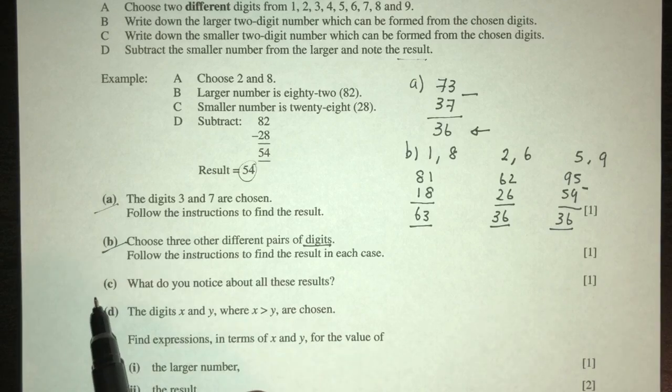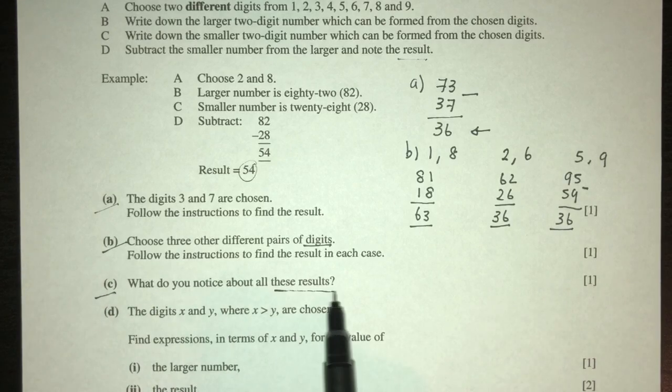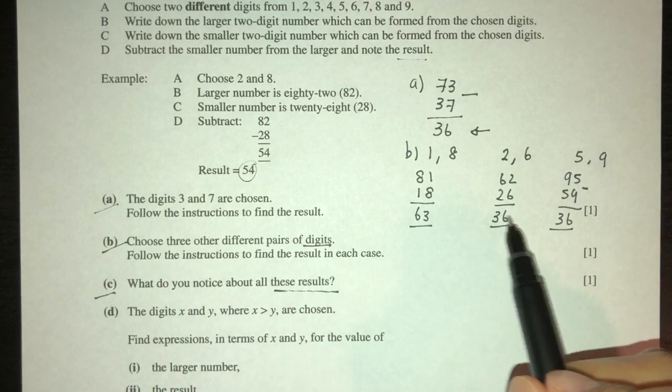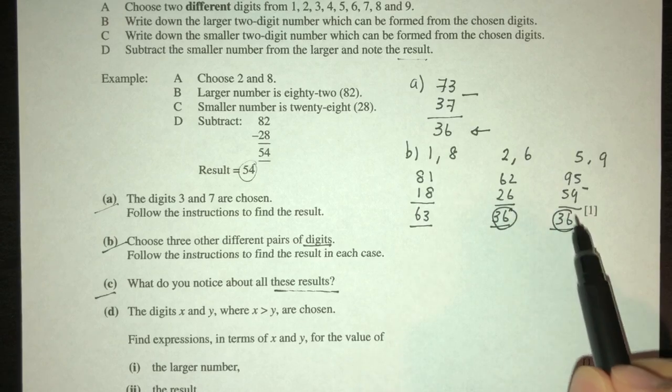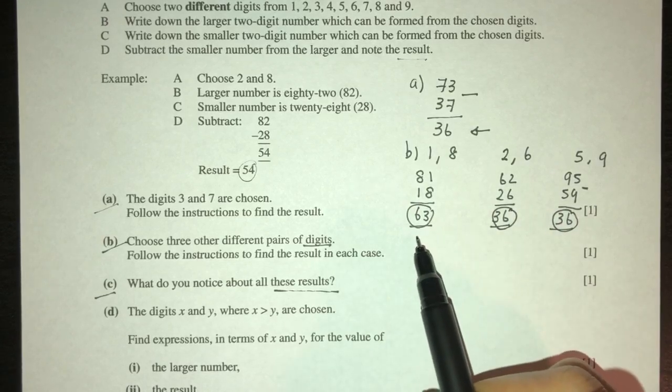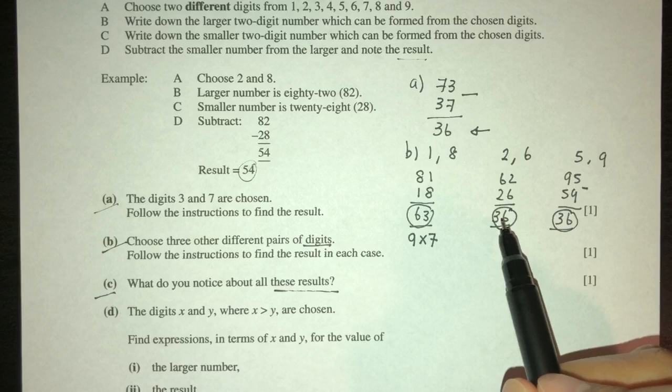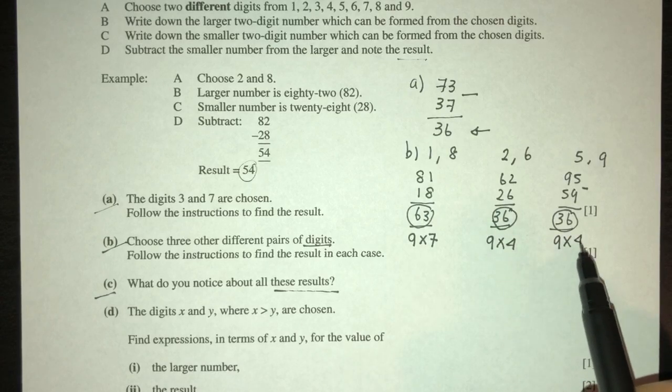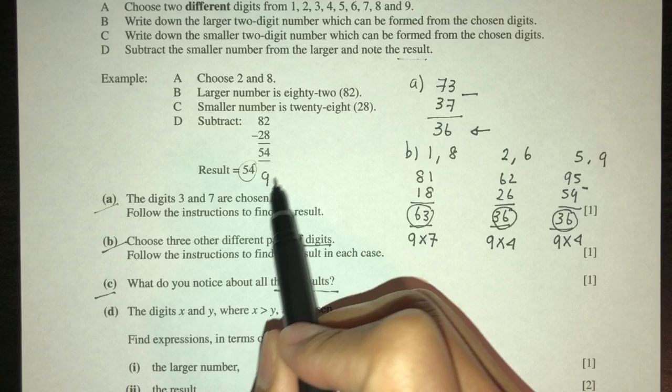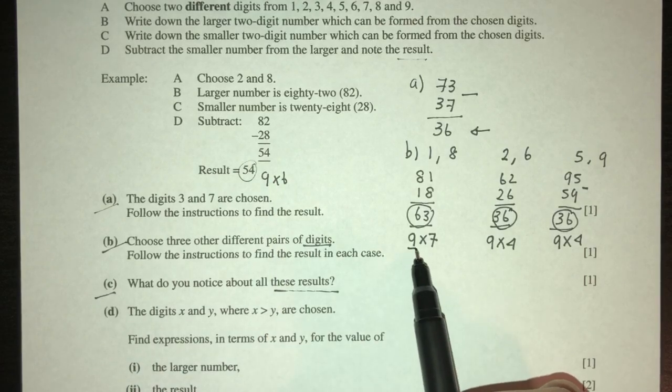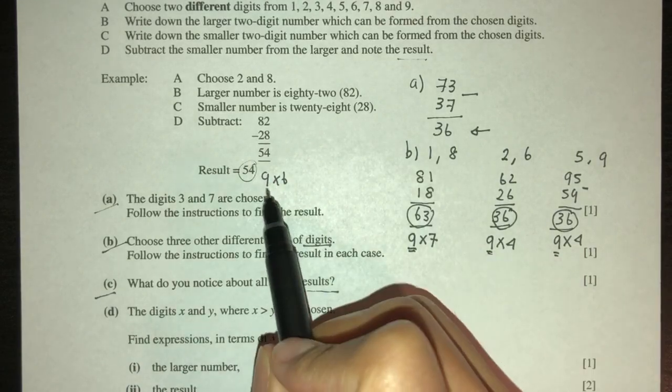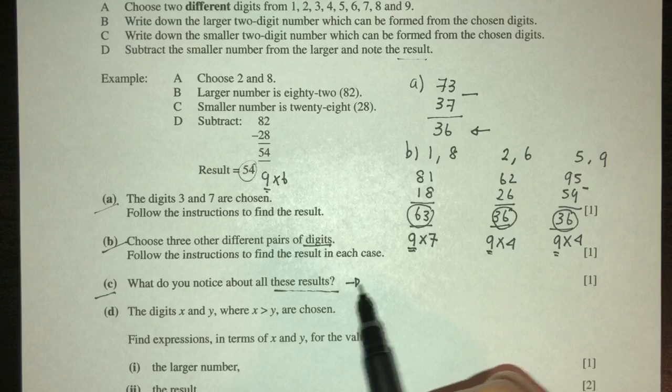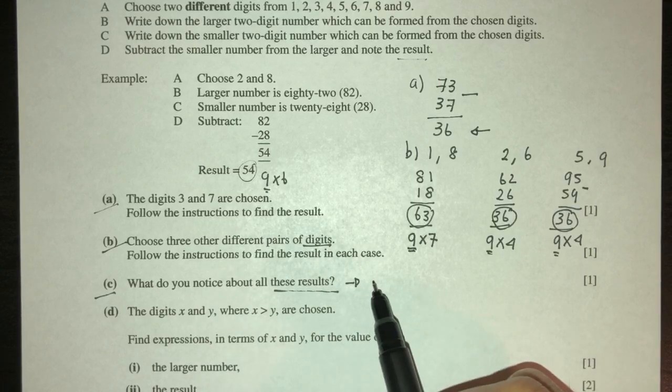And it says part (c): what do you notice about all these results? So if you see, we have 36, 63, and 36. So what is this? This is 9 times 4, this is 9 times 7, and this is 9 times 4 as well. This is 9 times 6. It seems that we have 9, 9, 9, 9. It means that the results are multiples of 9.